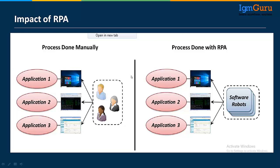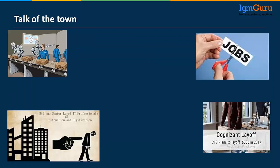If three different applications each have one person working on them, one software bot can replace all three and work across all three applications. That is the huge impact of RPA. If you've heard about Cognizant layoffs or Infosys layoffs — yes, that is partly because of RPA. HFS Research says the IT sector will lose 6.4 lakh low-skill jobs because of RPA.